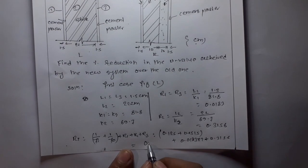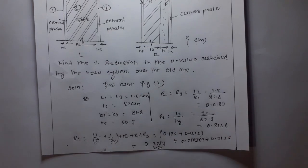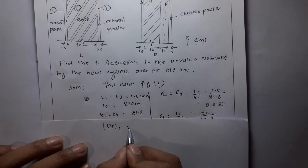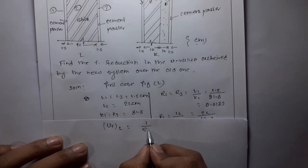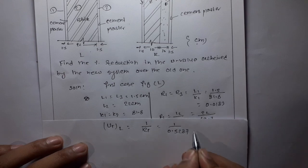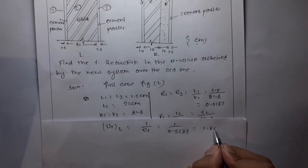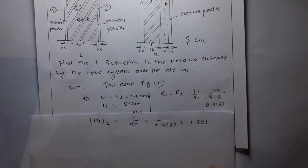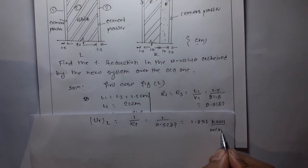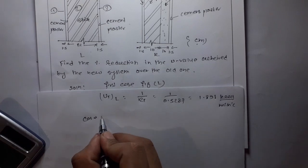This equals 0.5287. U1, the overall heat transfer coefficient, is one upon R total, which equals 1.891 kilocalories per meter square per degree centigrade.